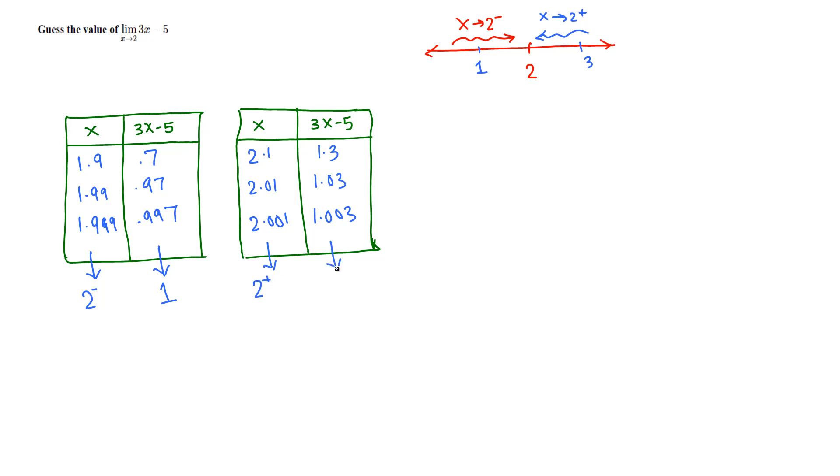We designed these x values so that x approaches 2 from the right side, and we saw that these values are approaching 1. We just saw the left-hand limit is 1 and the right-hand limit is 1. They are the same. That means we can guess the value of this limit to be 1.